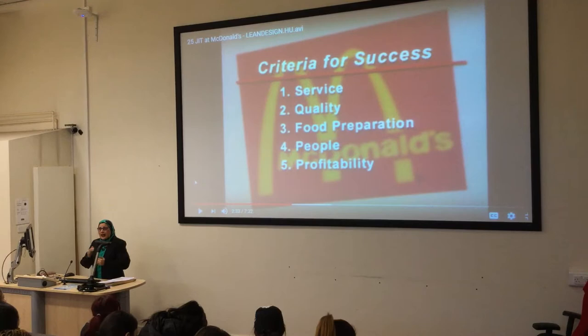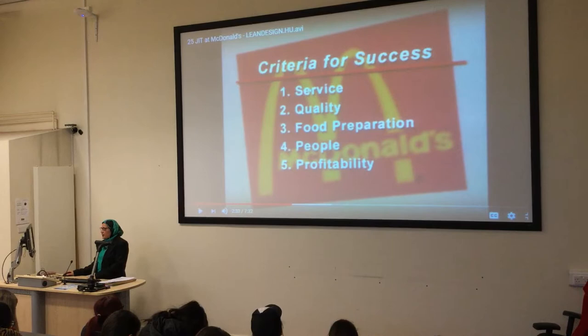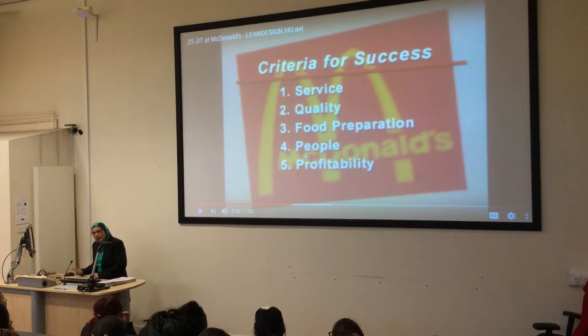The McDonald's video shows just-in-time: how the process works, the manufacturing cell, how an order starts and flows through. The criteria for success shown include service, quality, food preparation, and vehicle profitability. These criteria are the balanced scorecard dimensions - can someone remind me what the balanced scorecard perspectives or dimensions are?